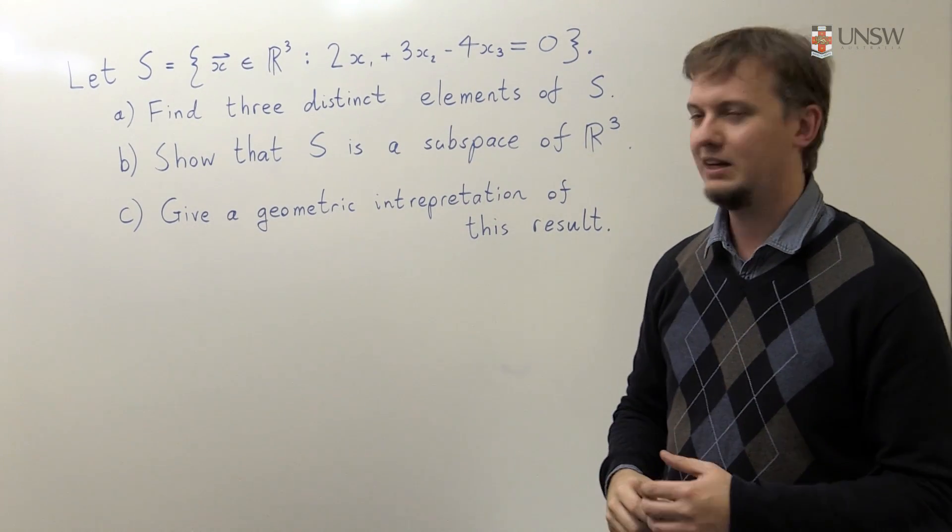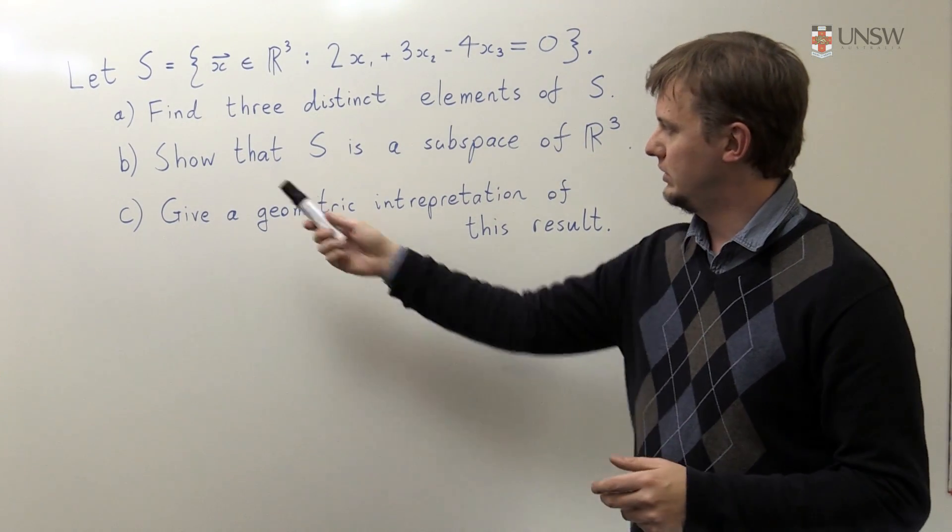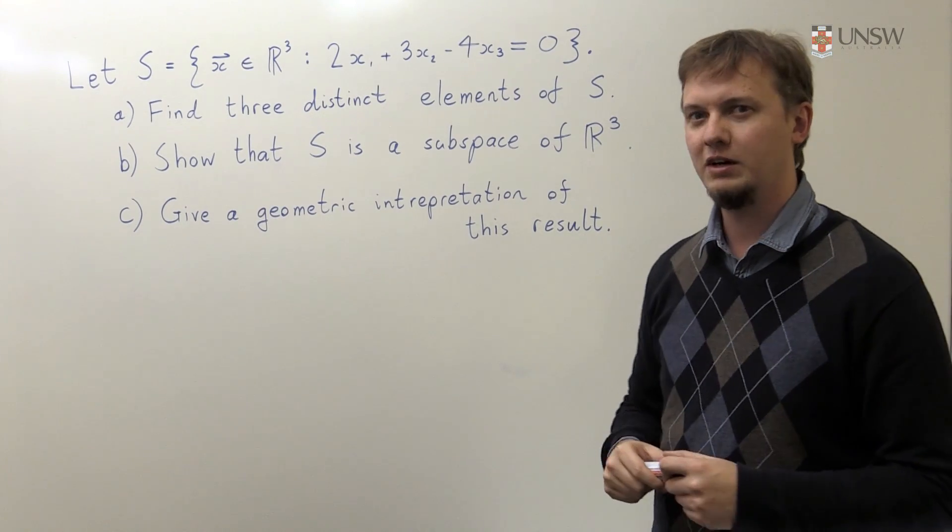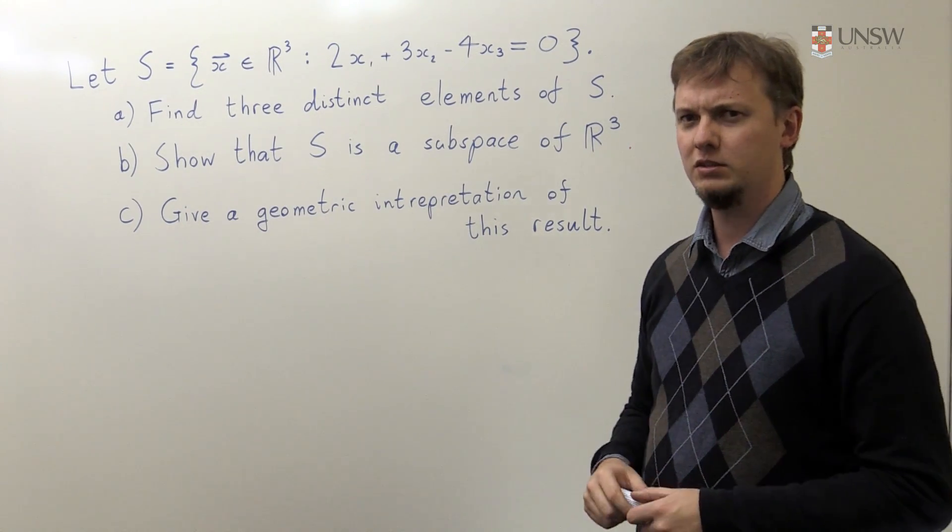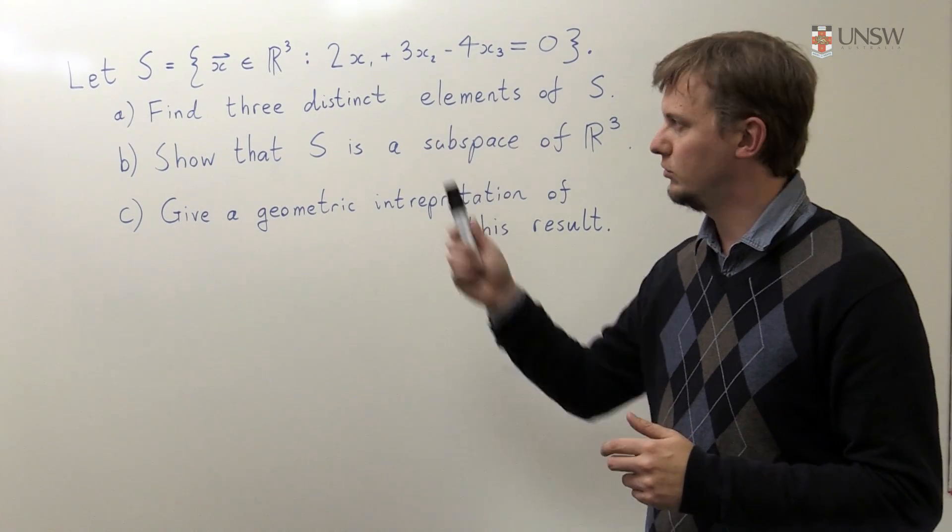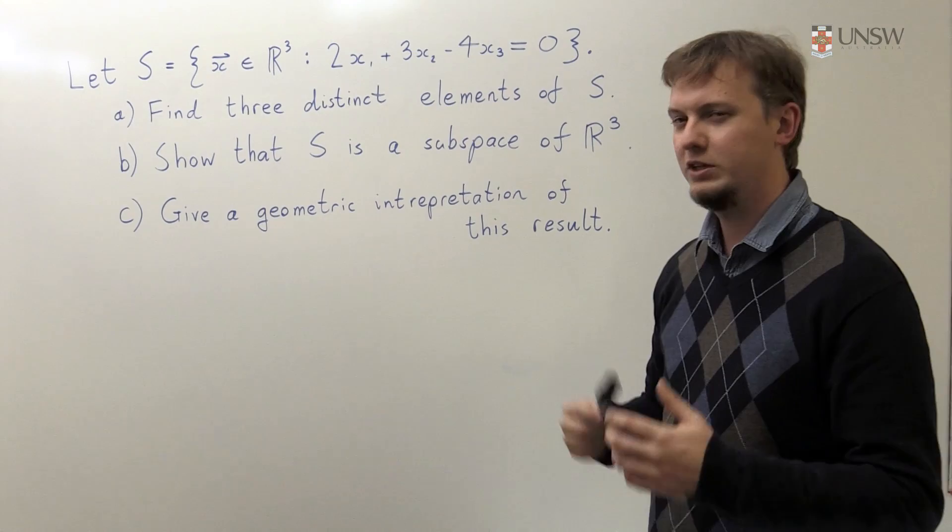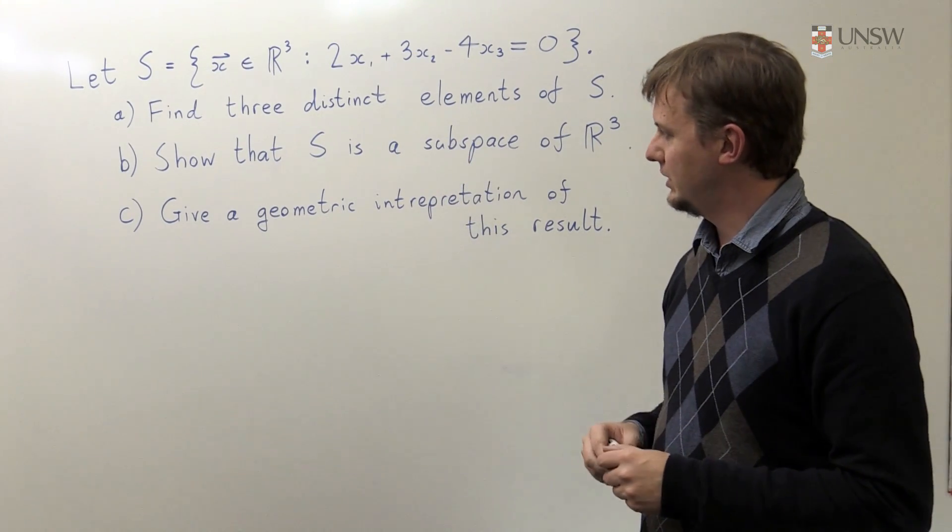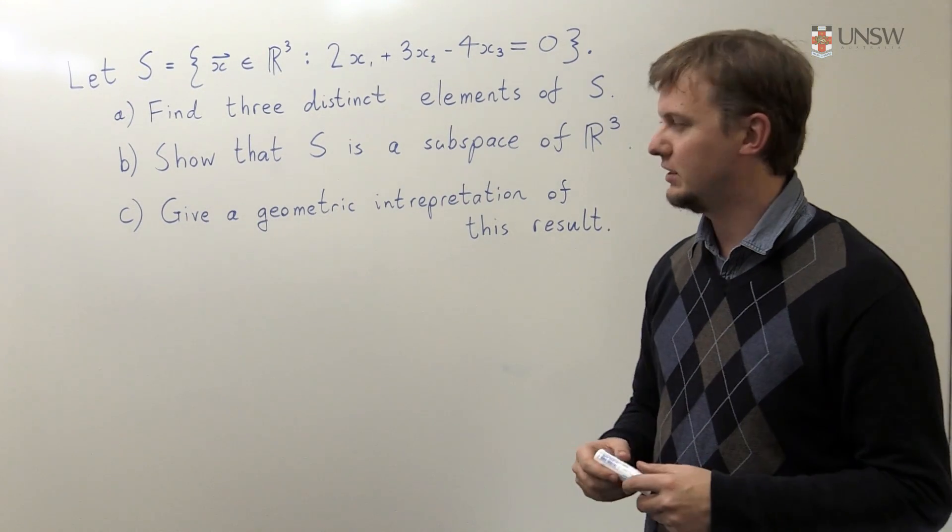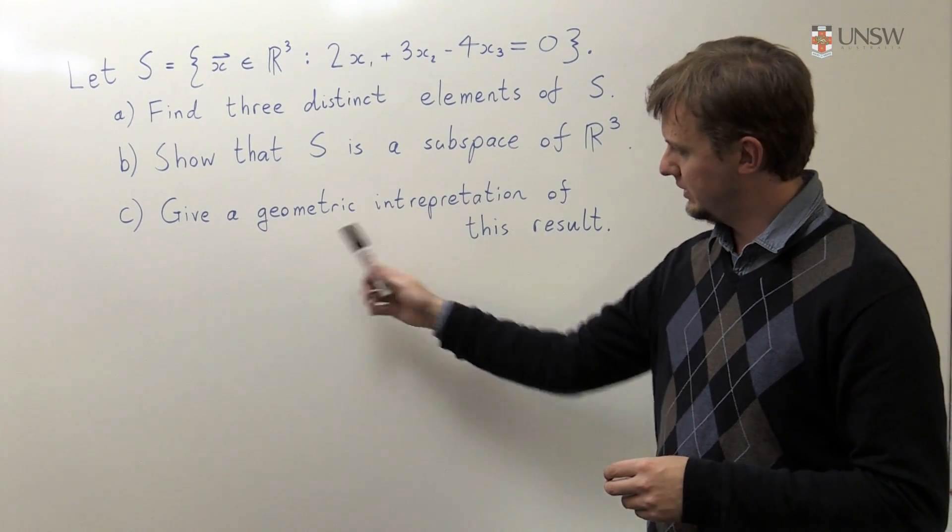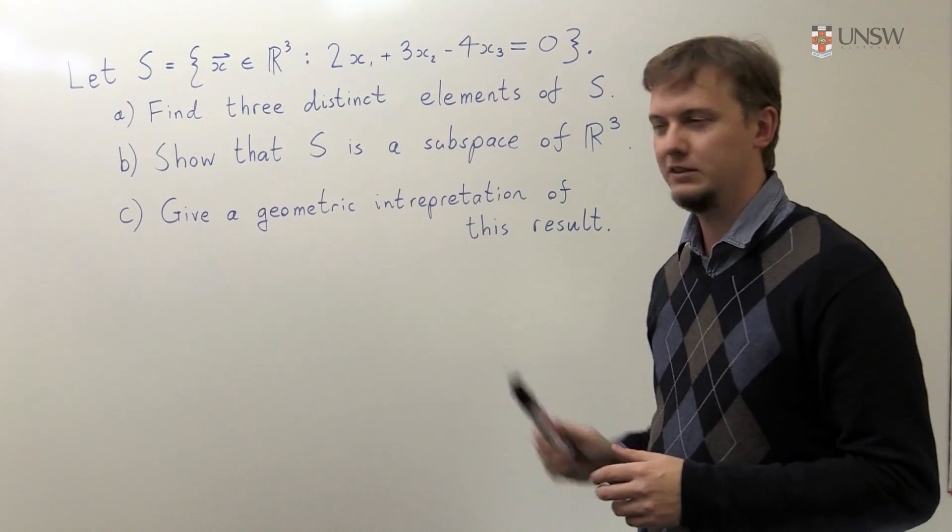We need to show that S is a subspace of R³, and we need to give a geometric interpretation of this result. So this first part is quite easy - all we're going to have to do is write down three distinct elements. The second part, well, we'll have to go for a general argument and that's going to take a bit of time. And the last part, well I guess we'll see how hard that is when we get to it.